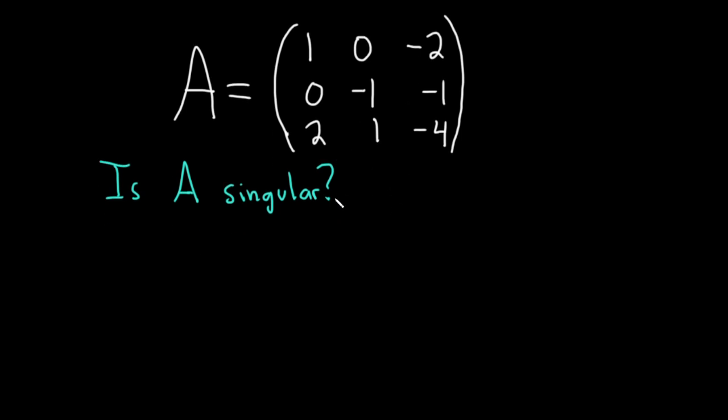To compute the determinant we're going to use what's called cofactor expansions. So the determinant of A, that's notation for determinant, is equal to... Basically what you do is you have to pick a row or a column. I'm going to pick the first row and you can use any row or column.